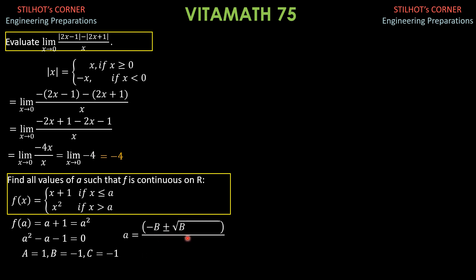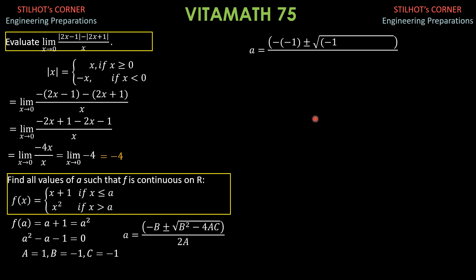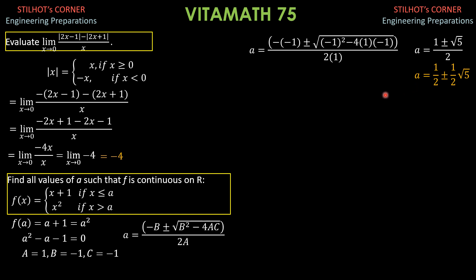Using the quadratic formula, A equals negative B plus or minus square root of (B squared minus 4AC), all over 2A. Substituting: A equals negative of (negative 1), plus or minus square root of ((negative 1) squared minus 4 times 1 times (negative 1)), all over 2 times 1. The value under the radical is 5, so we have square root of 5. Therefore A equals 1 plus or minus square root of 5, all over 2, which is one-half plus or minus one-half of square root of 5.